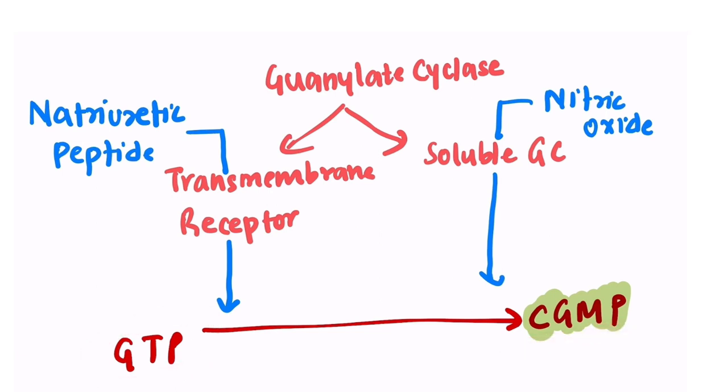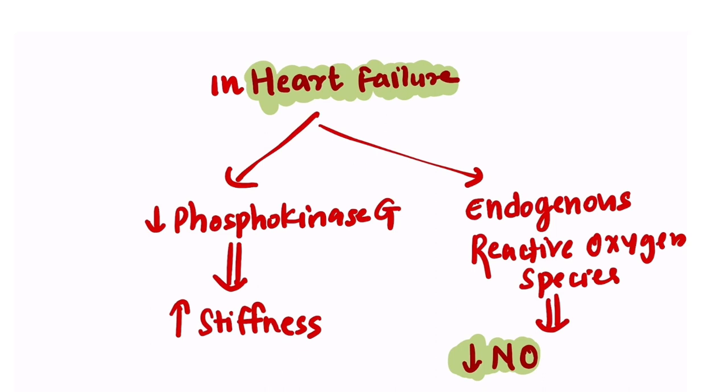I think now this is making sense because, as we already know, cyclic GMP is very important. And now we know how cyclic GMP is formed. Before we understand what Vericiguat has to do with all these things, we need to understand one more thing: that is, pathophysiology of heart failure.